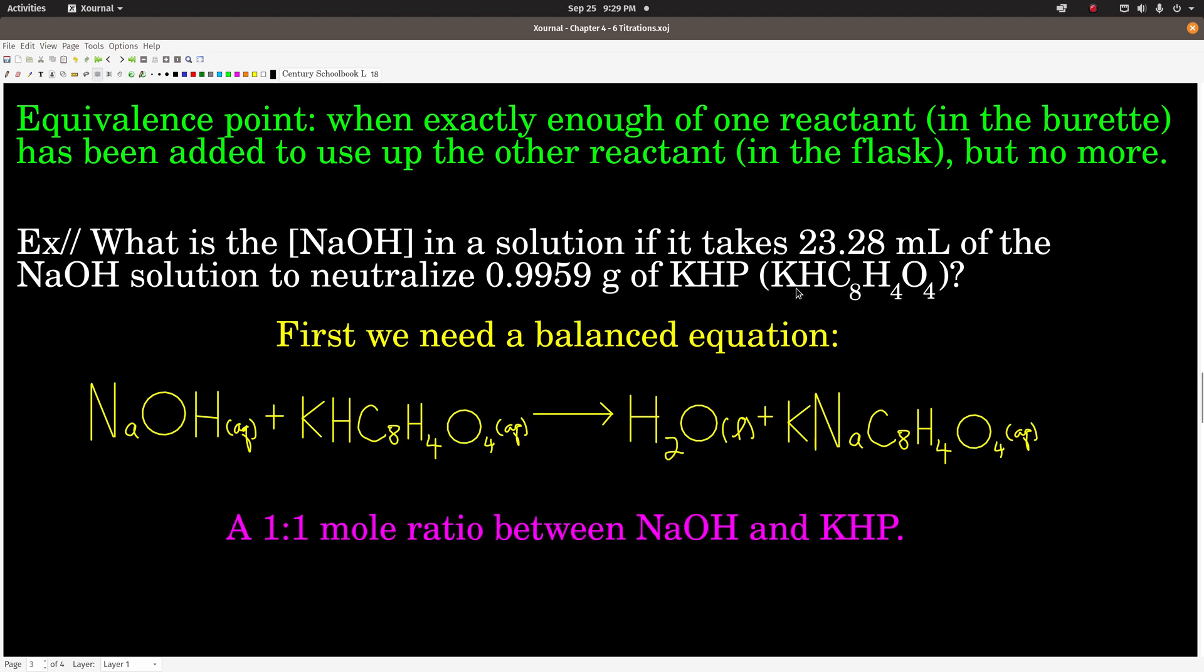So KHP is what we call a monoprotic acid. This ends up being the formula for it, but the only important thing we really care about is in an acid-base reaction between sodium hydroxide and KHP, there's only one proton, one hydrogen, that reacts with the hydroxide. And so the balanced equation looks like this right here. One mole of sodium hydroxide reacts with one mole of KHP, makes a mole of water, and a mole of the salt over here. But really, the only thing for this stuff we care about is that it's a one-to-one mole ratio between NaOH and KHP.